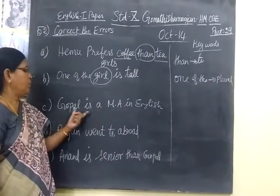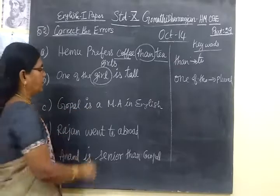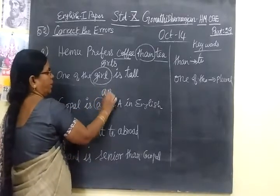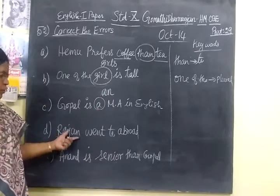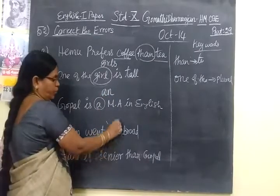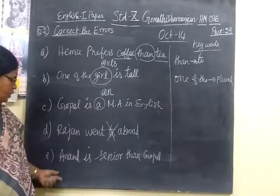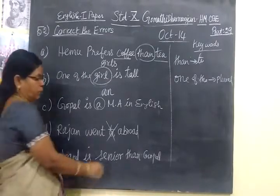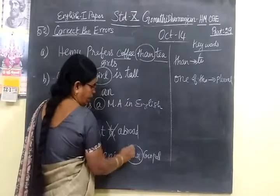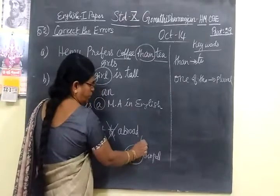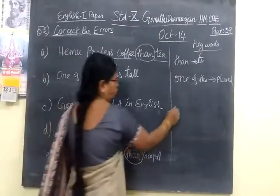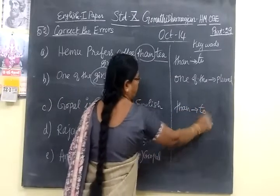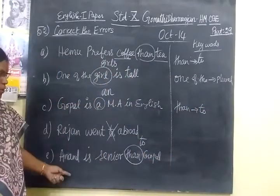'Gopal is a/an way' — here you are using 'an.' Then 'Rajan went to abroad' — not 'went to abroad'; the correction is 'Rajan went abroad.' Then 'senior than Gopal' — you are using 'to' instead of 'than.' The keyword: instead of 'than,' you are using 'to.'